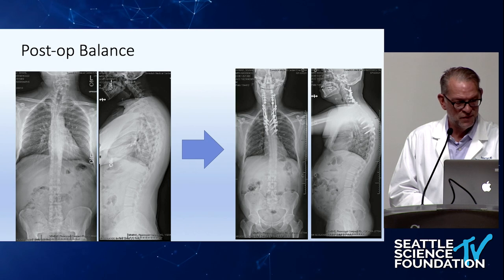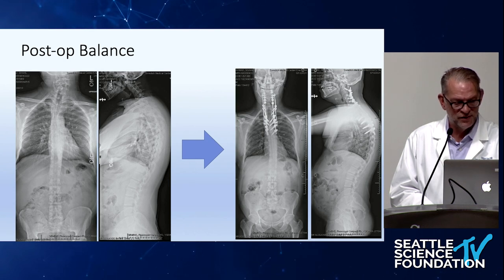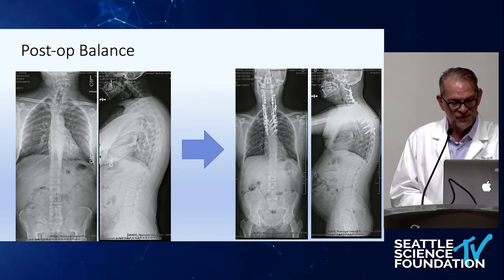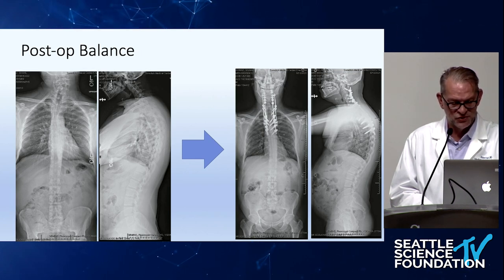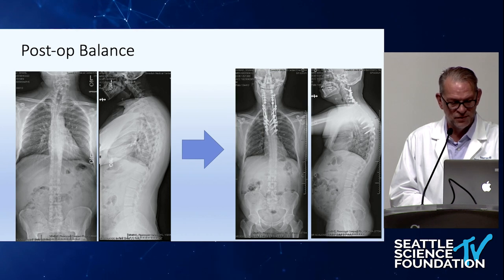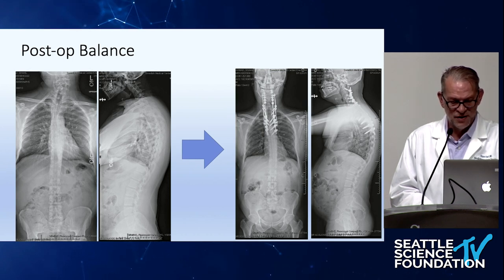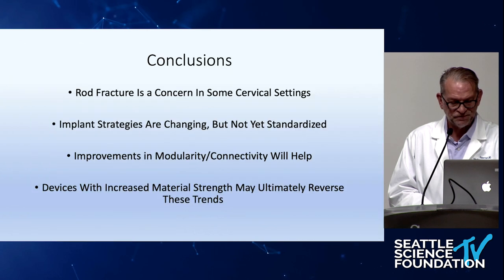He's very early in his recovery, and I'm just throwing out some ideas about how we might approach this using modular implants to accomplish stronger constructs. His long films postoperatively show shoulders in much better alignment and overall balance — maybe not perfect, but he may yet have further postural change in the lower thoracic levels to balance out the coronal plane.